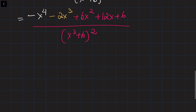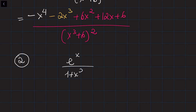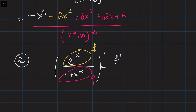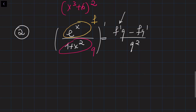Now let's take the derivative of the second function: the quotient of eˣ divided by (1 + x²). Again, we denote the numerator as f and the denominator as g. The derivative of this ratio is f'g minus fg' divided by g squared. I want to emphasize again: first take the derivative of the function in the numerator, not the denominator.